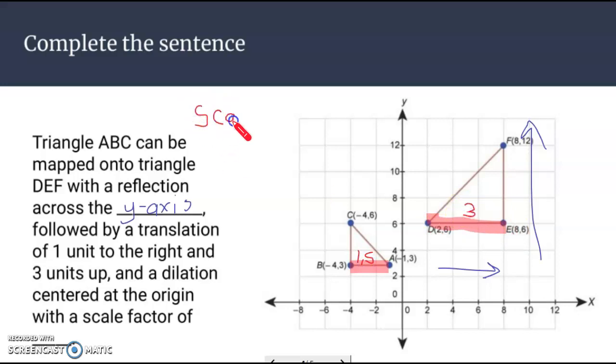just take the second measurement and divide it by the first. The second one is three, and I'm dividing it by 1.5. Three divided by 1.5 gives us two. Scale factor of two. The second triangle is twice as big as the first triangle.